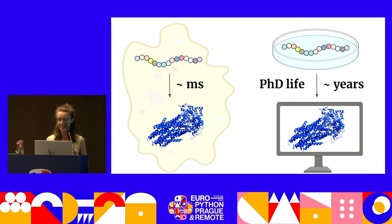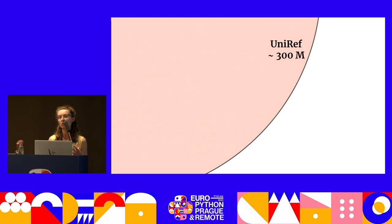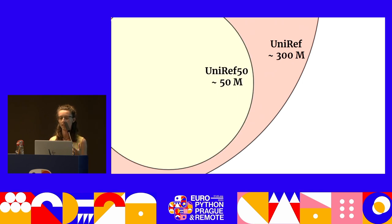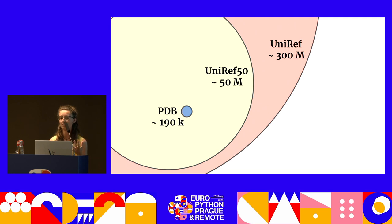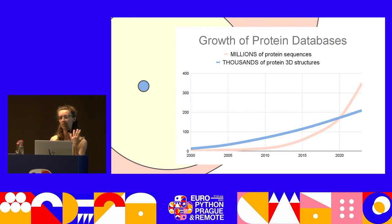This difficulty in obtaining 3D structures is very nicely demonstrated in the size of protein databases. The UniProt database, which holds all protein sequences, contains something like 300 million sequences — clustered down to about 50 million. But if you want to look at 3D structures, which are important for knowing protein function, you're at something like 190,000 records. So this disproportion between sequence and structure databases is really striking.